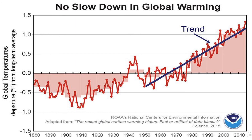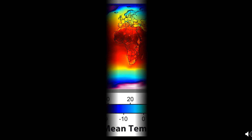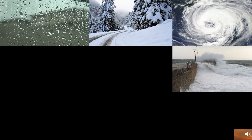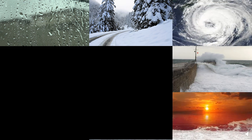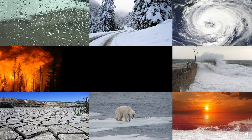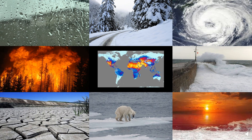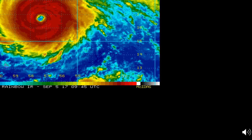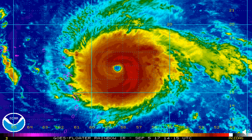But why is this a problem? Increasing temperatures can lead to changing rain and snow patterns, stronger storms, higher sea levels, warmer oceans, less snow and ice, more droughts and wildfires, and of course higher temperatures and more heat waves, which increases the chances of more natural disasters such as hurricanes. They have started to happen more frequently.